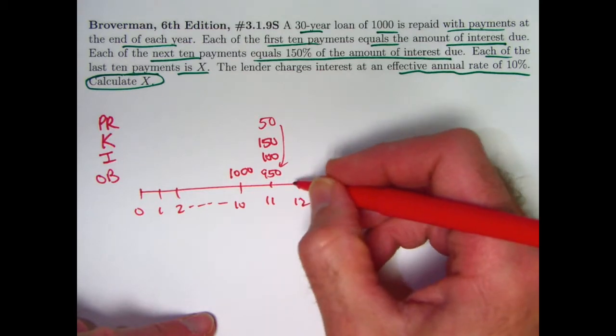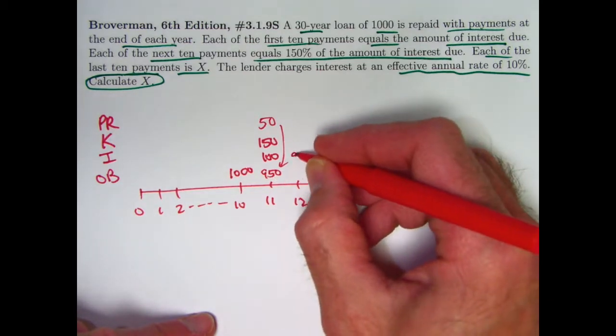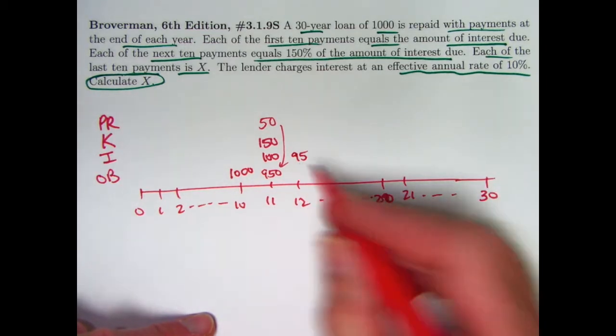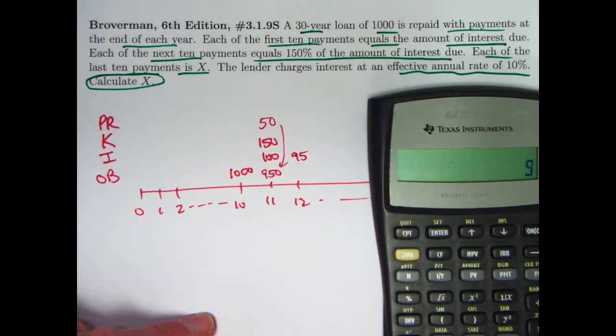Over the next year, from time 11 to time 12, the interest that accrues is 10% of 950, which would be 95. You are going to pay 150% of that. So take that amount, that 95, and multiply it by 1.5,